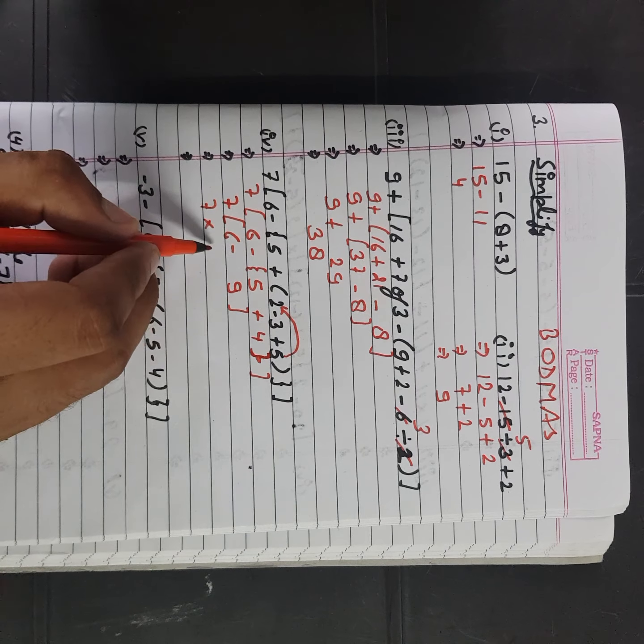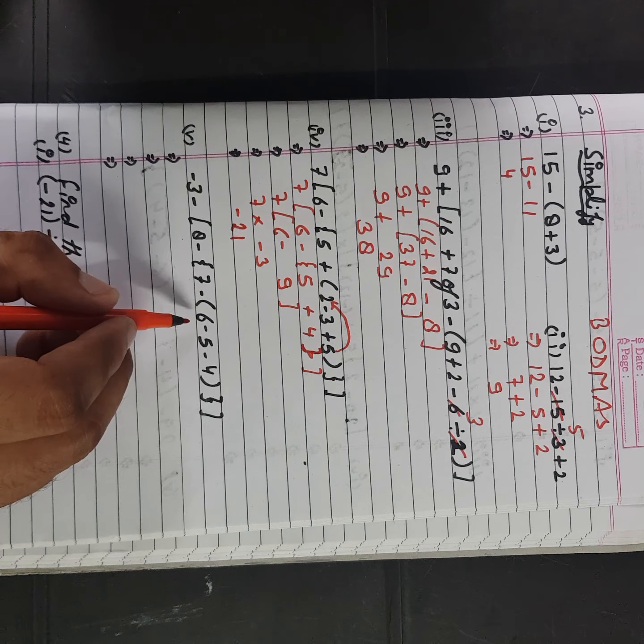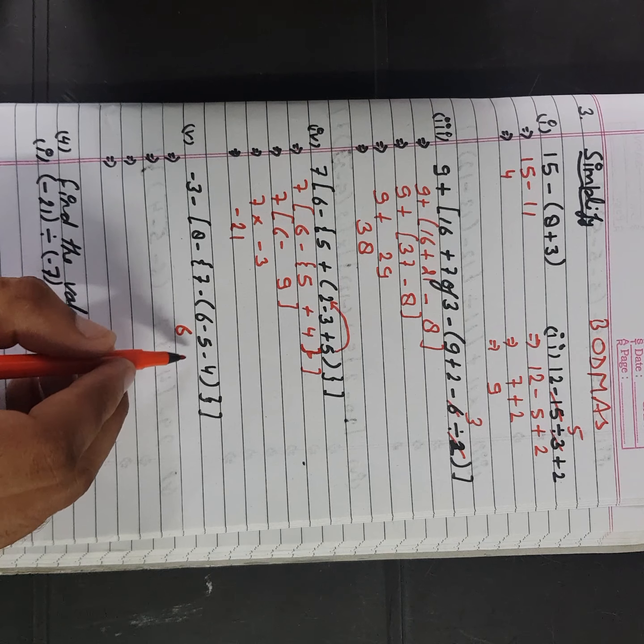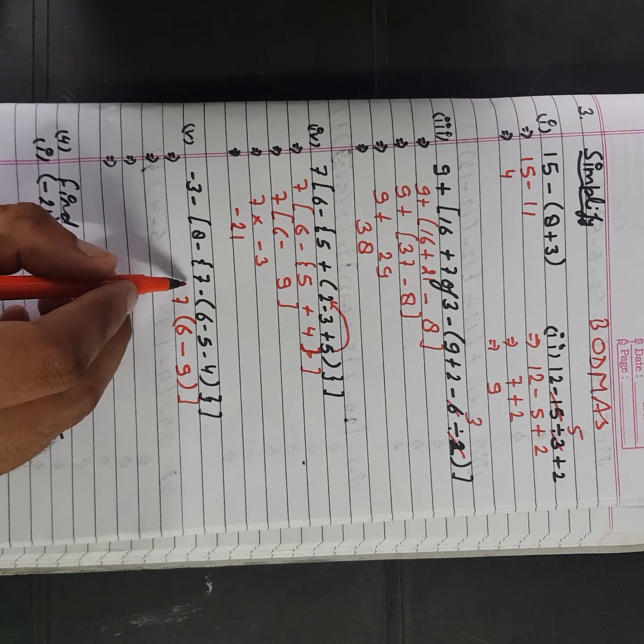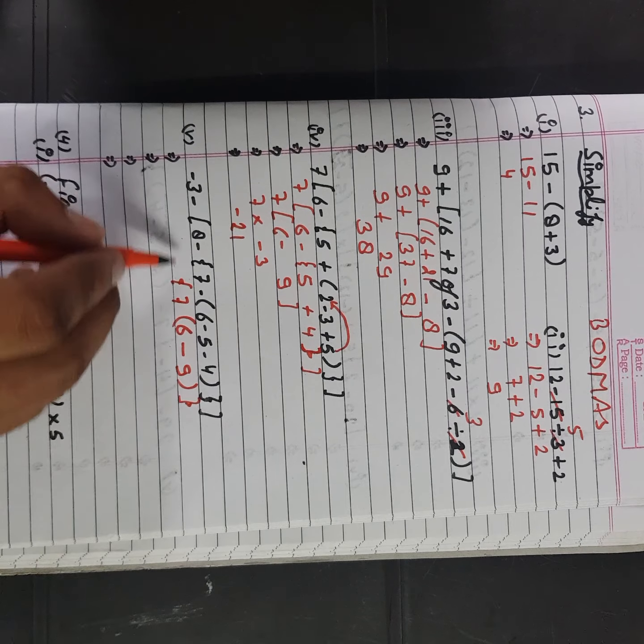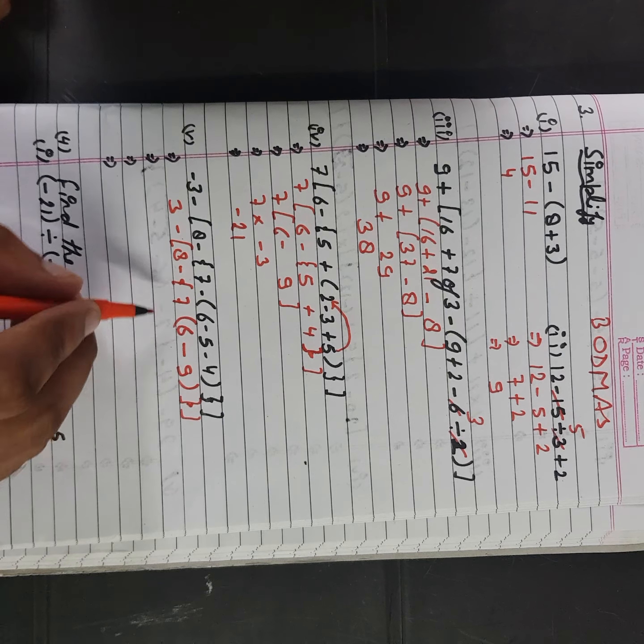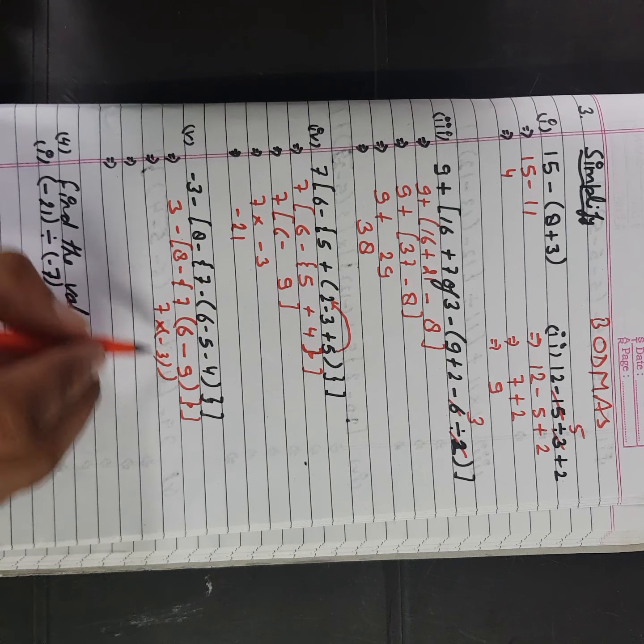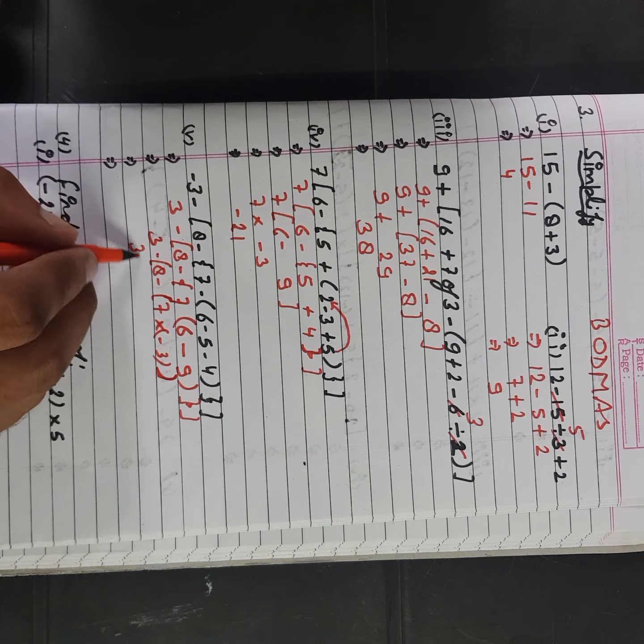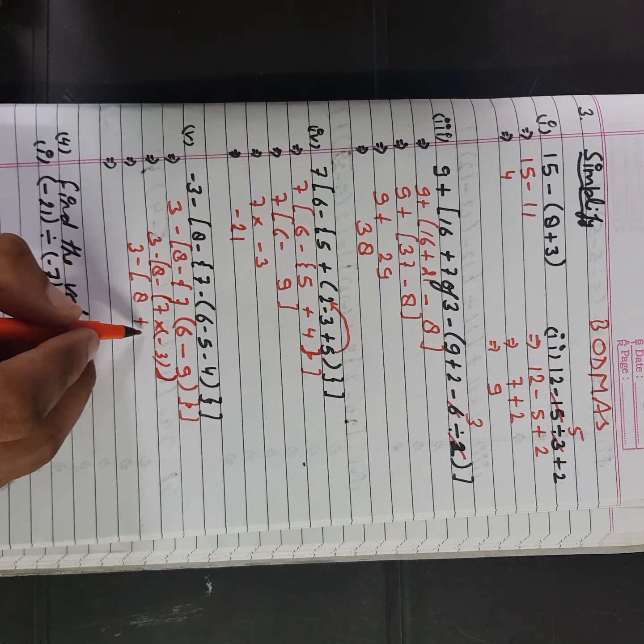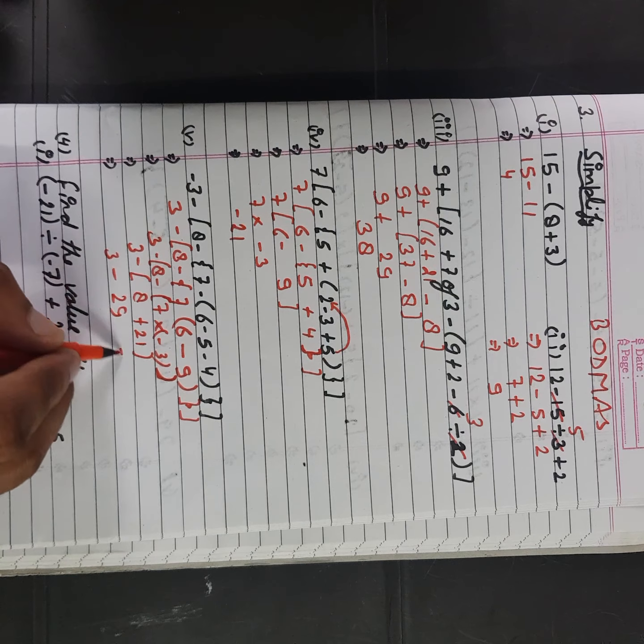7 into minus 3, 7, 3 minus 21. Now this one. Minus 3 minus 3 to 7, 7 into minus 3. Minus 8 and minus 3, 3 minus 7 to 3 is 21, 8 minus minus plus 21. 3 minus 8 to 29 minus 9, minus 26.